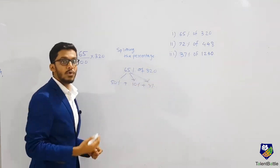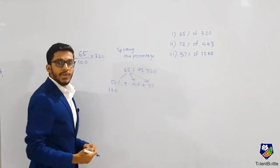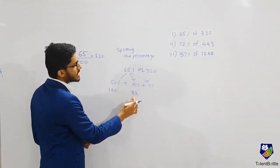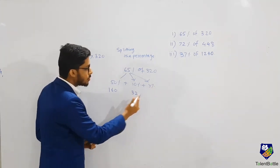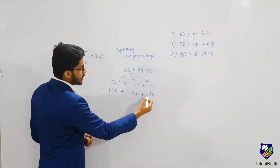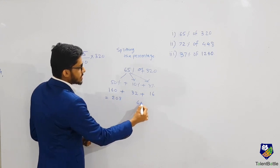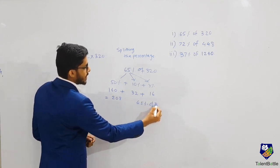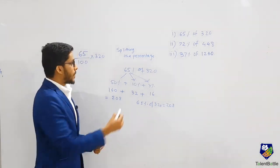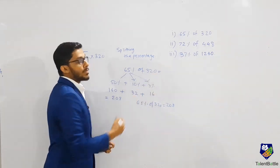50 percent of 320 is half of 320, which is 160. 10 percent of 320 is 32. Since 10 percent is 32, 5 percent will be half of 32, which is 16. So directly, 160 plus 32 plus 16 equals 208. So 65 percent of 320 is 208. By splitting the percentage you can easily calculate the exact value.